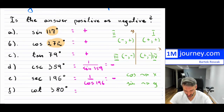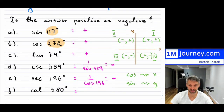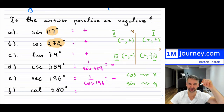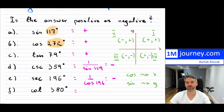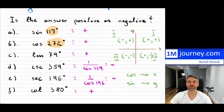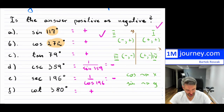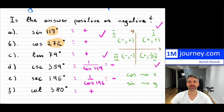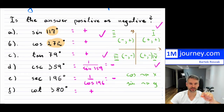Finally, cotangent — which is the reciprocal of tangent — of 380 degrees. That's 360 plus another 20 degrees, so you're back to the first quadrant. In the first quadrant all values are positive, so this is positive. That's how I remember which ratios are positive or negative: simply determine which quadrant the angle lands in.